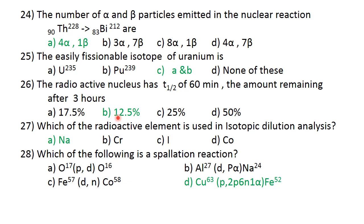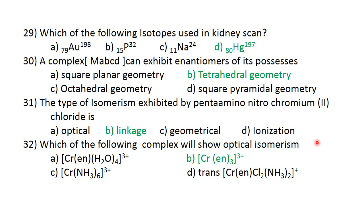Which radioactive element is used in isotopic dilution analysis? Sodium isotope is used. Which of the following is a spallation reaction? In this reaction, the outgoing particle is the same. This is 2p, 6n, 1 alpha and atomic mass will also decrease. This type of reaction is spallation reaction. Copper-63 gives Fe-52 is an example of spallation reaction. Question 29: Which isotope is used in kidney scan? That is mercury-80-197. Option D is the correct answer.